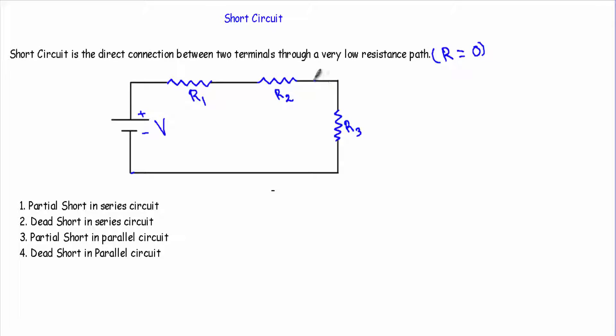Let's say I have three resistors R1, R2, and R3 connected in series with a voltage source V. I have two terminals: terminal A and terminal B. This A and B terminal will get shorted if I connect these two terminals with a very low resistance path — say this path has a resistance of nearly zero. When short circuit occurs, the resistance of the circuit becomes very low; as a result, a greater current will flow compared to normal, and this high current flow can cause severe damage to the circuit components.